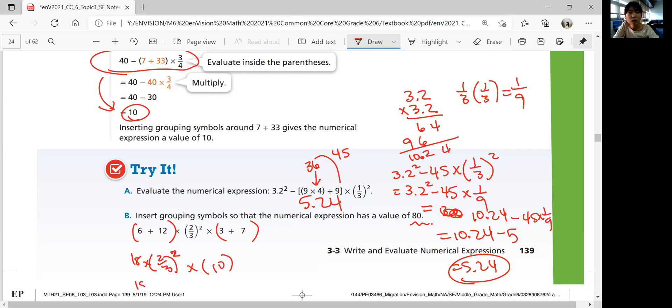And then 3 plus 7 is 10. So that's really 18 times 4 ninth times 10. And then you have simplify this. 2 times 4 is 8 times 10 is 80.